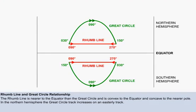You can see that in the northern hemisphere, tracking easterly, that the great circle track starts at 030 degrees and finishes at 150 degrees. In other words, the great circle track is increasing.